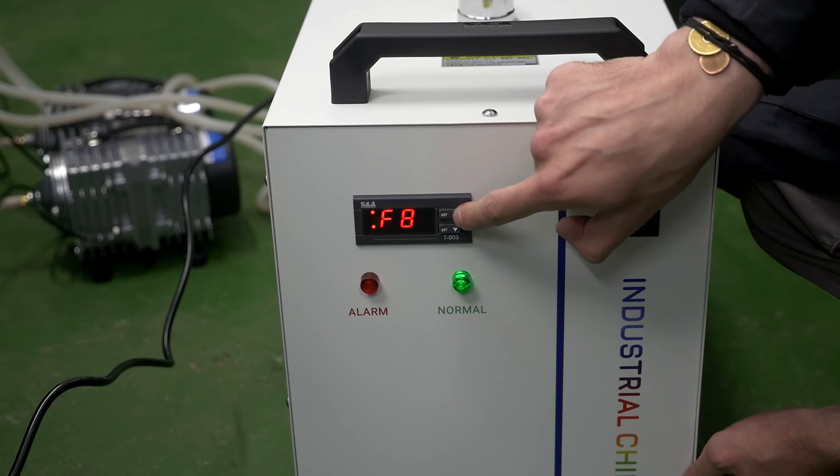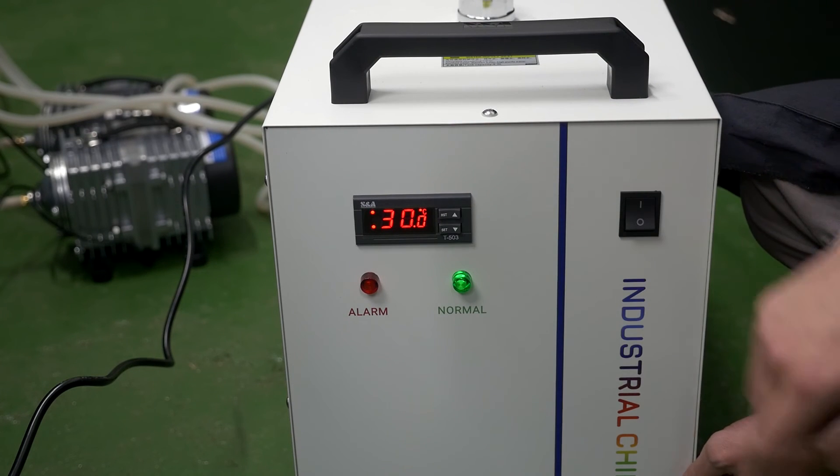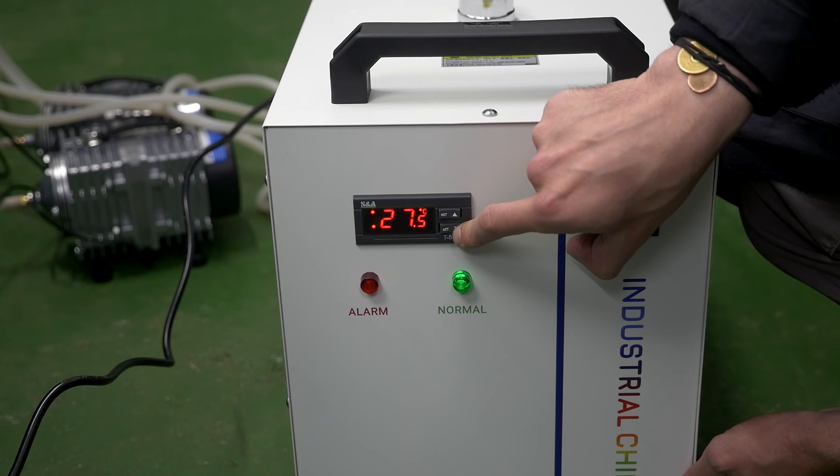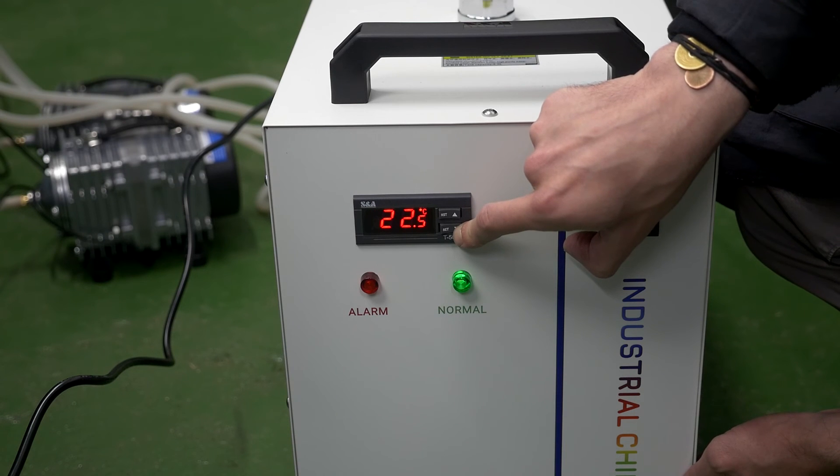Select F8 and press set. Set the value in the range 18 to 25 and press set. This parameter sets the upper limit value for the water temperature in the chiller.